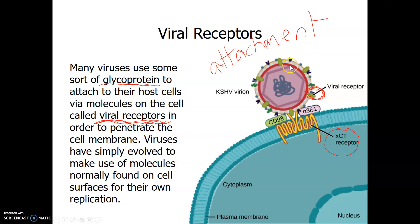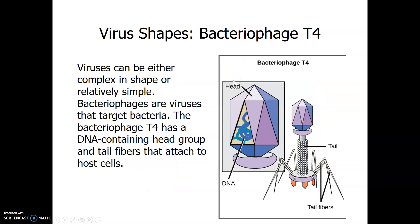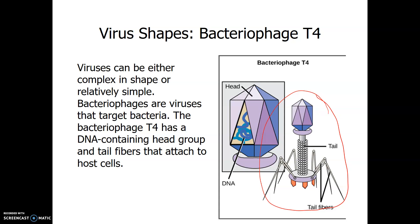The hexagon shown here is the capsid — the protein capsid — and then this outer layer is the envelope. Some viruses don't have an envelope, but this one does. You may recognize the other virus shown because we saw an image of it taken by an electron microscope in an earlier slide. This is called a bacteriophage — bacteriophage T4 — and it looks a little bit like a spaceship. It is a virus that attacks bacteria; that's what a bacteriophage is.